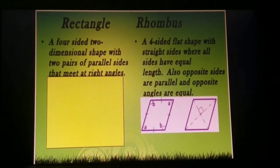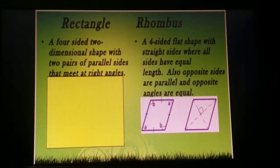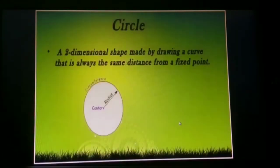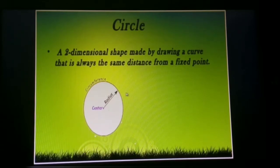Now the rhombus. A rhombus is a four-sided flat shape with straight sides where all sides have equal length. Also, opposite sides are parallel and opposite angles are equal. Now circle: a circle is a two-dimensional shape made by drawing a curve that is always the same distance from a fixed point.